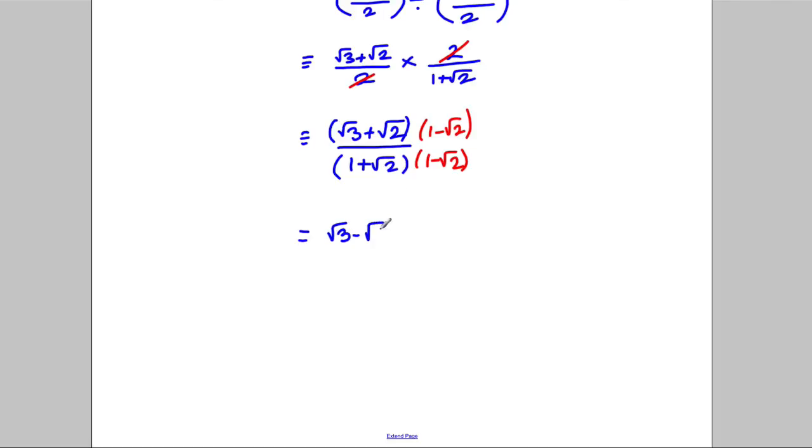What would we get on top? We'd get root 3, subtract root 6, add root 2, subtract root 4, which is 2, so subtract 2, all divided by this thing here would turn out to be 1 subtract 2, which is negative 1.